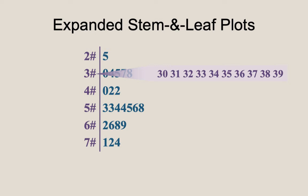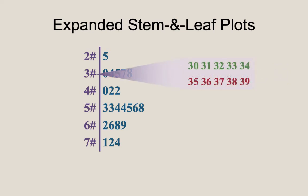If we want, we could break this into two groups of five values, the five values from 30 to 34, and the five values from 35 to 39.